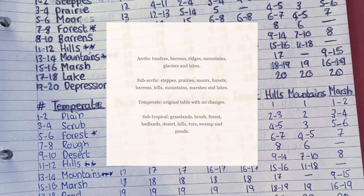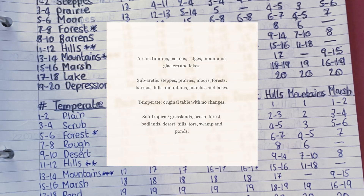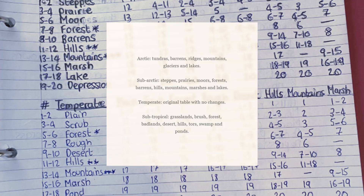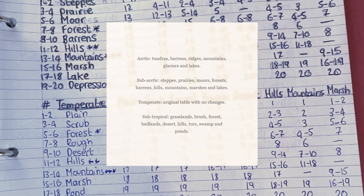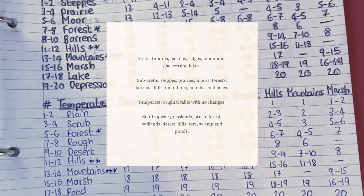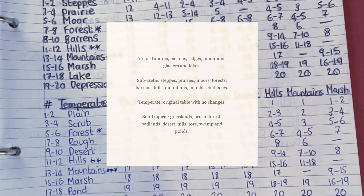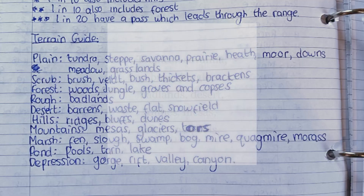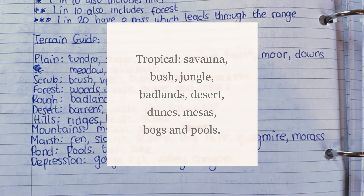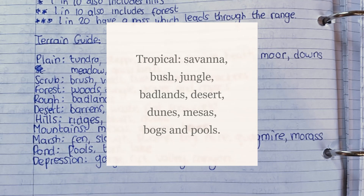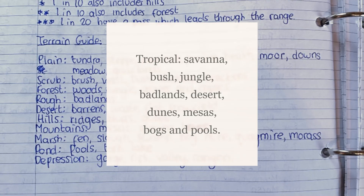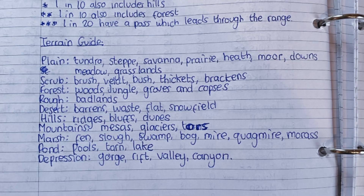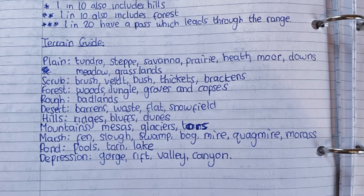The arctic table contains tundras, barrens, ridges, mountains, glaciers, and lakes. The temperate table is basically the original table we came up with in a previous video with no changes being made. The subtropical table contains grasslands, brush, forest, badlands, desert, hills, mesas, bogs, and pools. So the terrain types are varied, but in terms of wandering monsters we can still treat terrain according to the terrain guide in many cases. For example, grasslands, savannah, and tundra can still all count as plain, and bogs and swamps would still count as marsh. Let a mixture of common sense and your imagination prevail, as well as your map-making skills.